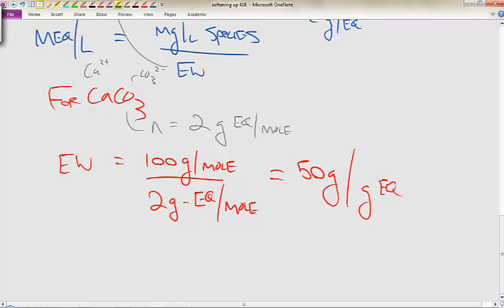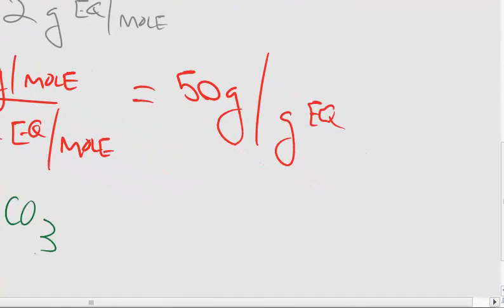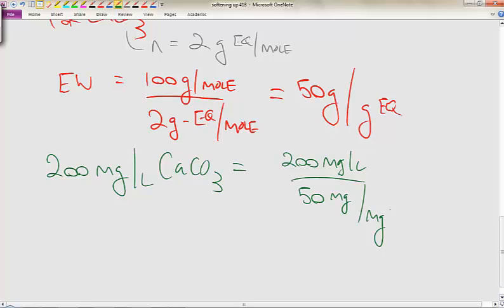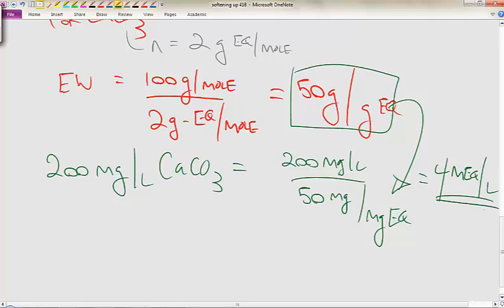All that divided by 2 grams per equivalent mole, and this is going to get these units to cancel out, would be equal to 50 grams per gram equivalence in this system. So let's say that we have as an example 200 milligrams per liter of CaCO3. If we want to get the milliequivalents per liter, that would be equal to 200 milligrams per liter divided by 50 milligrams per milliequivalent. That would give us 4 milliequivalents per liter.